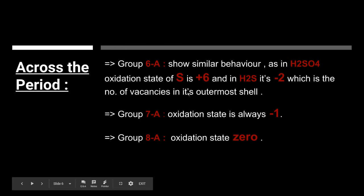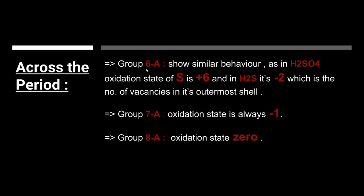For group 6A, which is the oxygen family — oxygen, sulfur, selenium, tellurium, polonium — they show similar behavior as group 5A. For example, in sulfuric acid H2SO4, the oxidation state of sulfur is positive 6, and in hydrogen sulfide H2S, it is minus 2, which is the number of vacancies in its outermost shell.